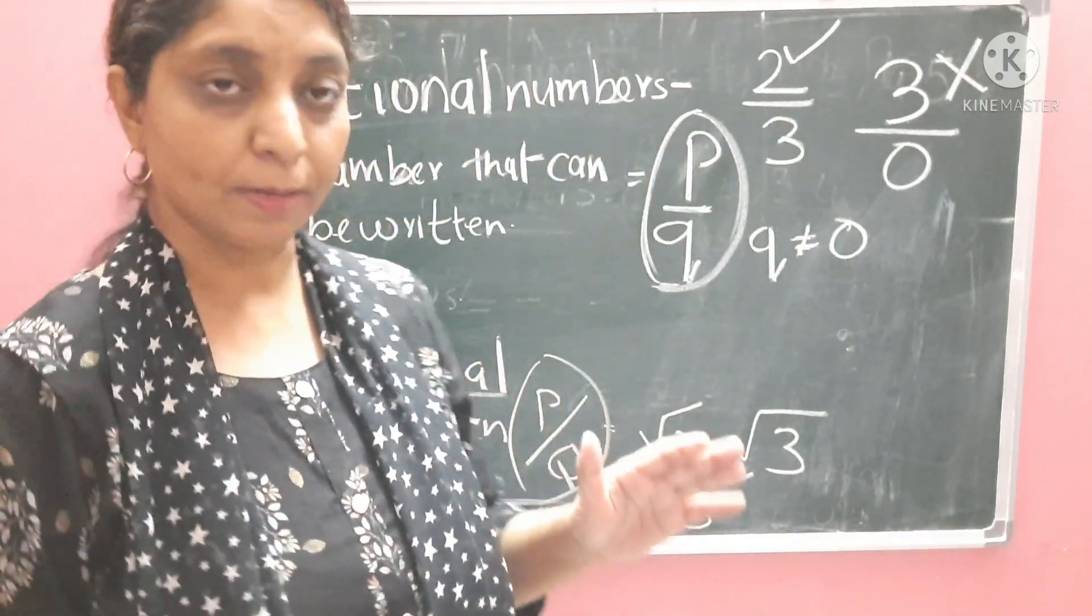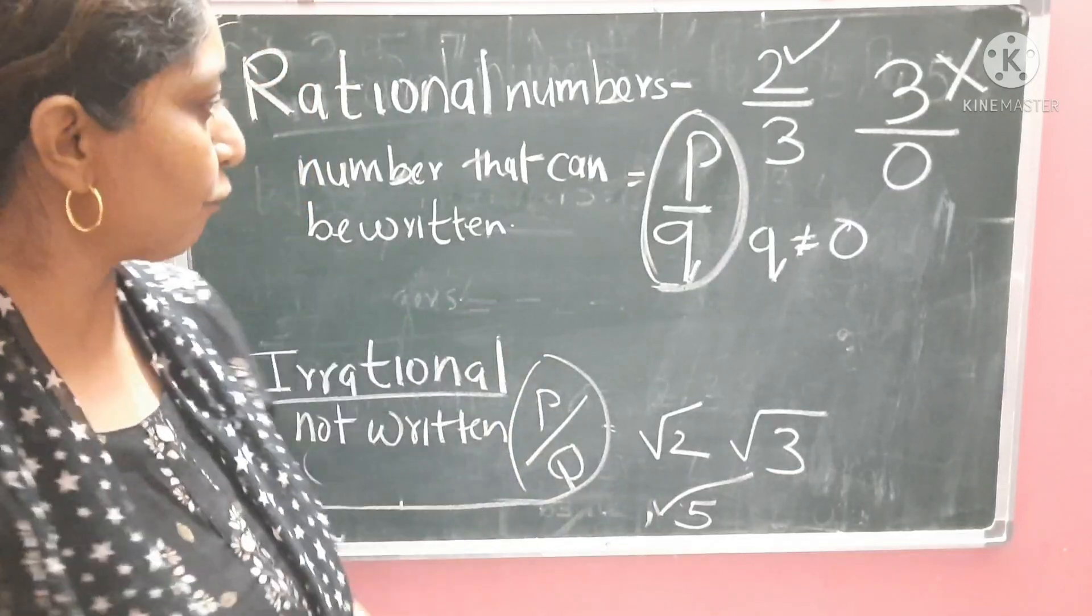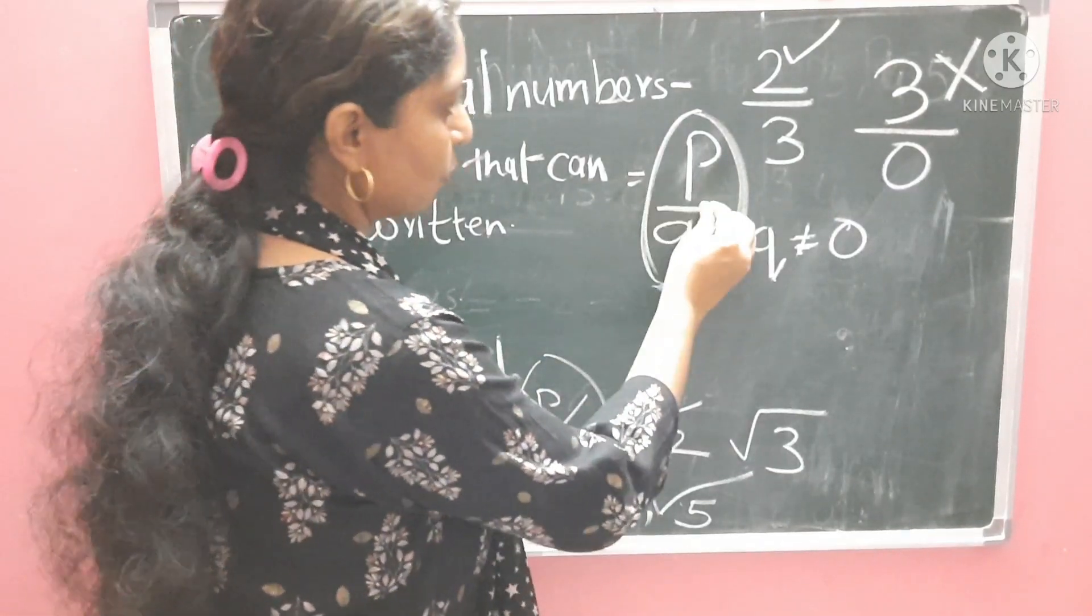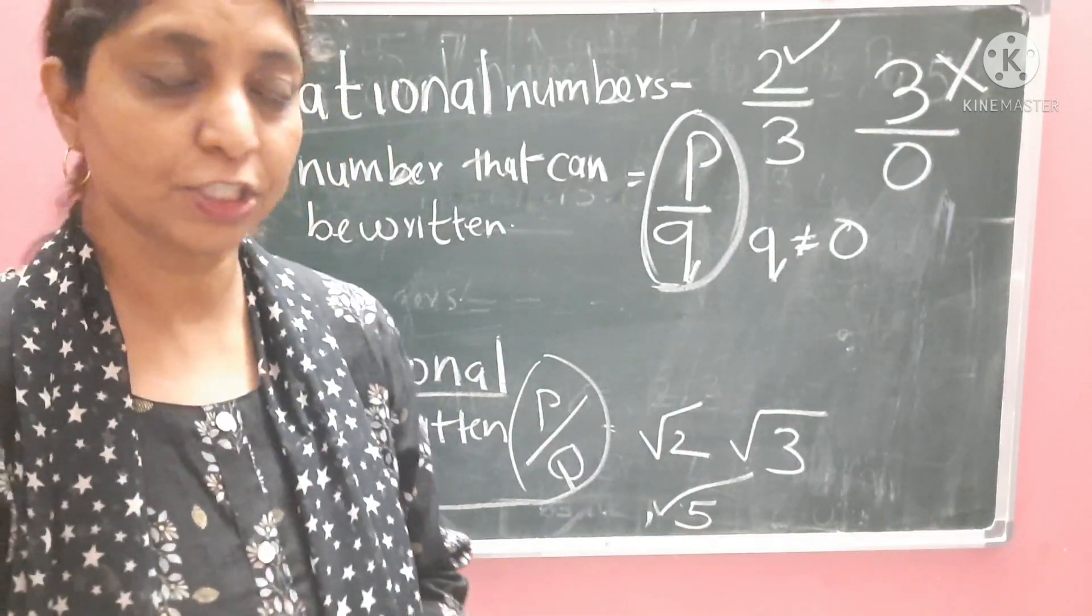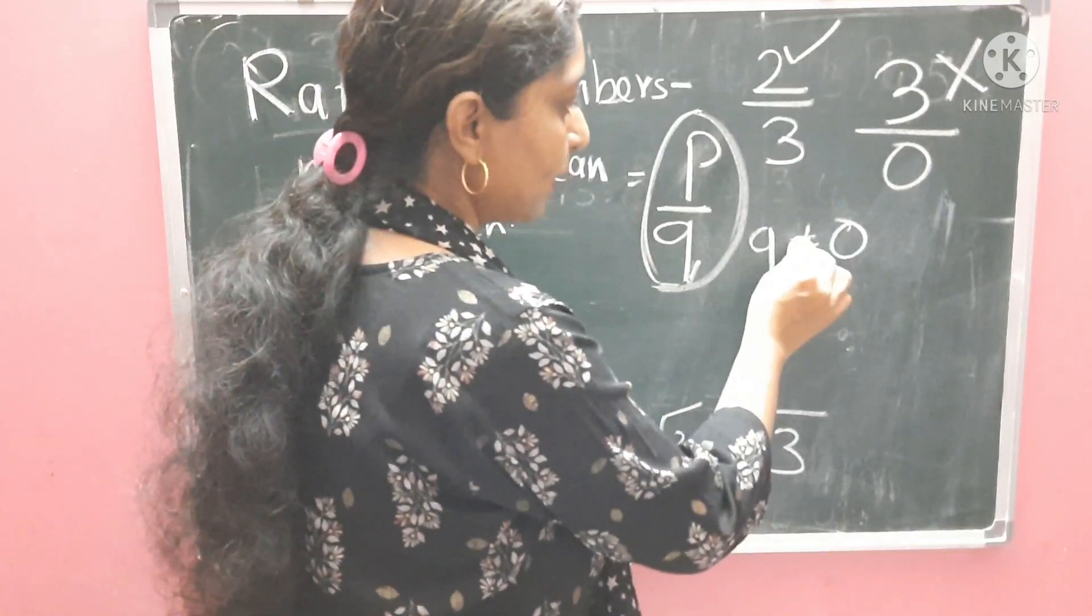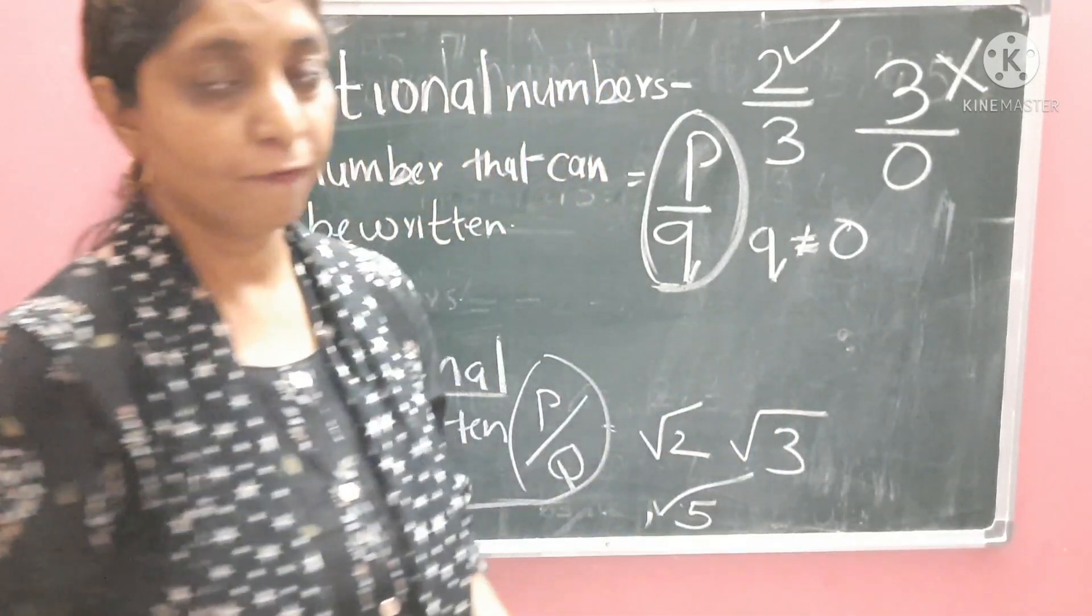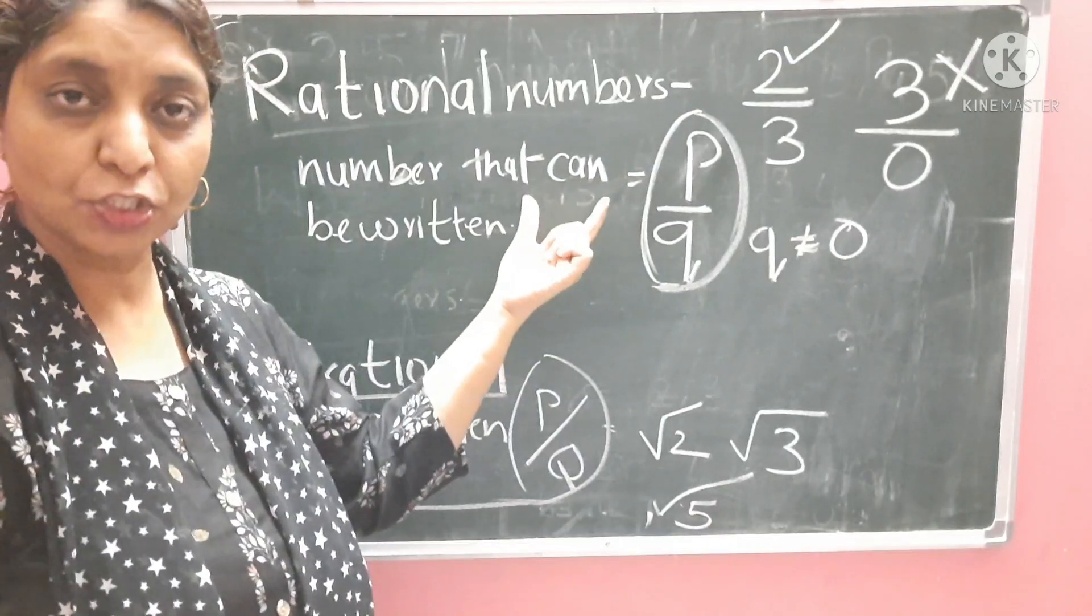So, rational numbers are those numbers which can be written in the form of P upon Q. Numbers that can be written in fraction form, where the denominator is not equal to 0. All these numbers are called rational numbers.